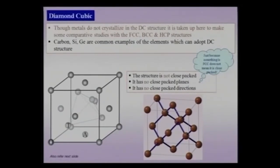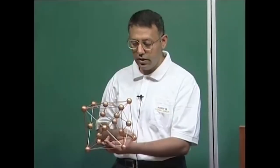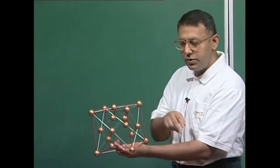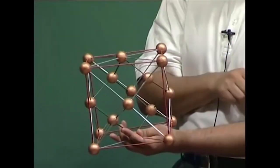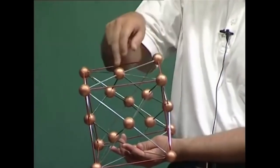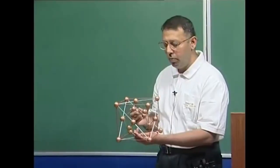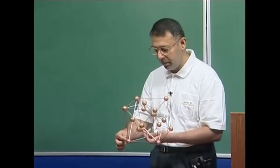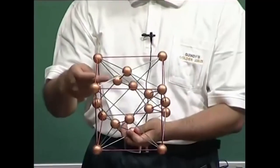We have already seen a model of the diamond cubic structure. I will take the model again to show important aspects like how the atoms touch. The important point to emphasize is that every atom — whether carbon, germanium, or silicon — is tetrahedrally bonded. That means for any atom there are four atoms at the vertices of a regular tetrahedron, and this tetrahedral order propagates in three dimensions.